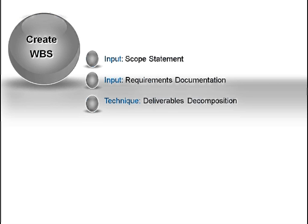The technique used to create the WBS is deliverables decomposition. Imagine you are given a project to create a fully functional international airport. For the sake of this example, let's ignore that creating an airport is bigger than a project and would probably exist at a program level or higher. You couldn't possibly sit down and jot down all the tasks necessary to complete this effort. The WBS won't contain any verbs — we're doing a decomposition of deliverables so we only need nouns.